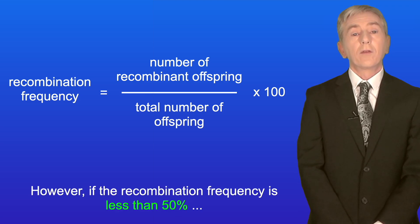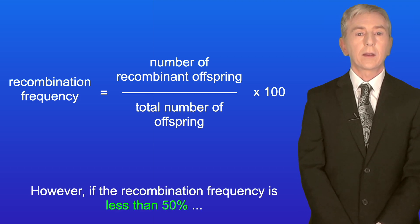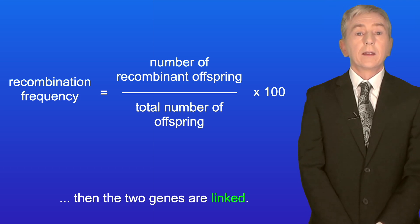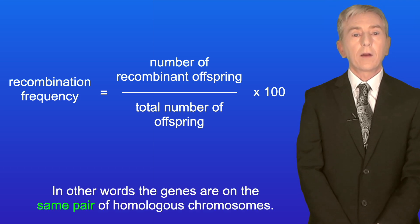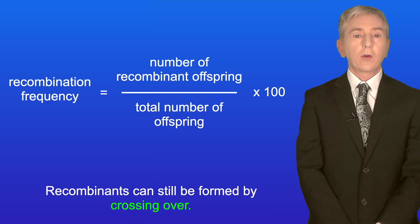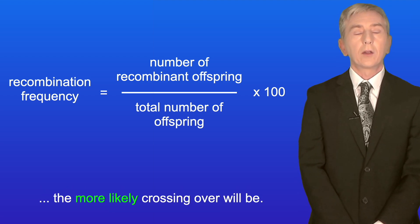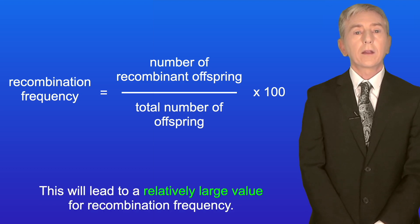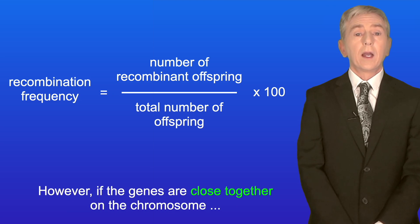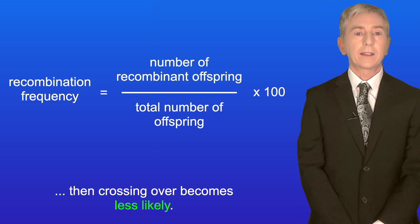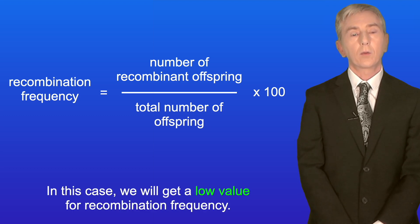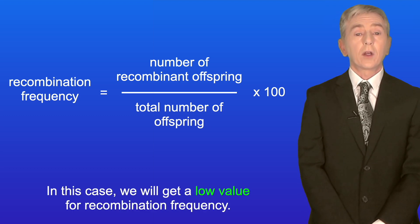If the recombination frequency is less than 50%, then the two genes are linked — in other words, the genes are on the same pair of homologous chromosomes. Recombinants can still be formed by crossing over. The further apart the genes are on the chromosome, the more likely crossing over will be, leading to a relatively large value for recombination frequency. However, if the genes are close together, crossing over becomes less likely, and we will get a low value for recombination frequency.